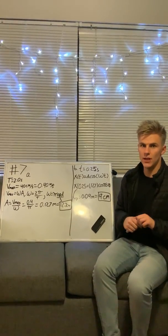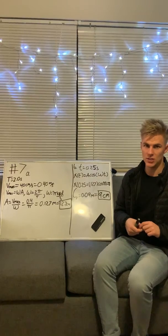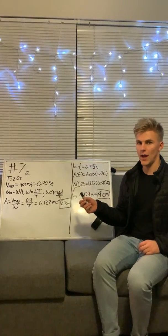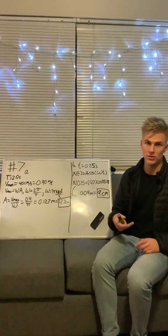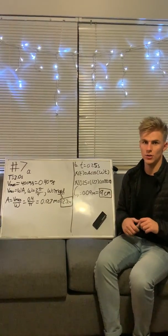I'm talking about number seven, which discusses an air track glider attached to a spring, pulled to the right and released at time zero seconds with a period of oscillation of two seconds.